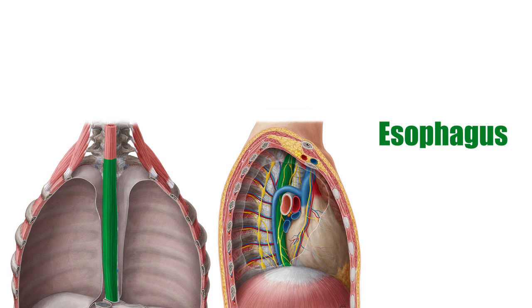The esophagus, seen here highlighted in green on these images, is a long fibromuscular tube that runs in the thoracic cavity and connects the pharynx with the stomach. It runs from below the cricoid cartilage at the level of C6 to the cardia of the stomach. In this tutorial, we will highlight the main anatomical features of the esophagus, including its constrictions and sphincters and its histological layers.